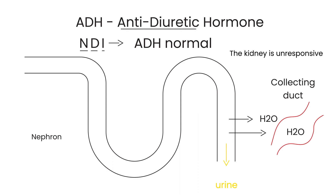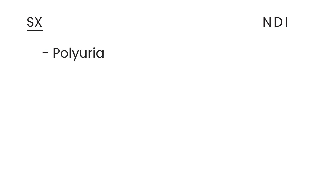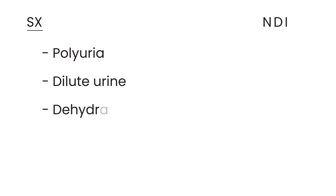Because the kidney is unresponsive, you don't get reabsorption of water. Instead of water coming back into the bloodstream, it passes out into the urine. As a result, you get a large volume of urine — polyuria — and the urine will be very dilute because so much water is being lost. This leads to dehydration.